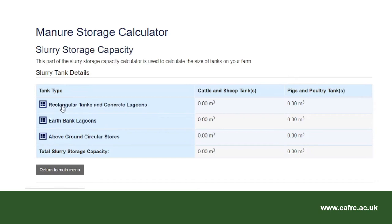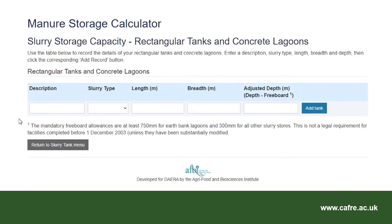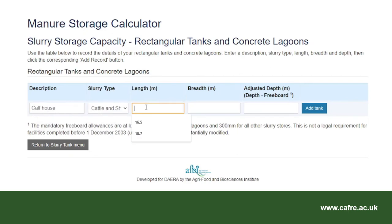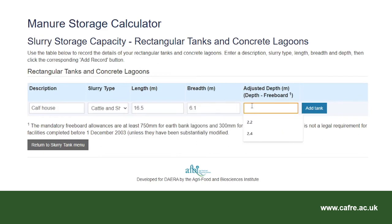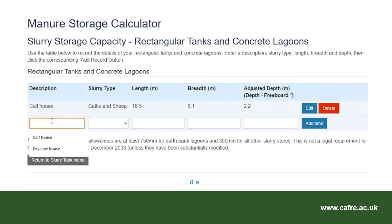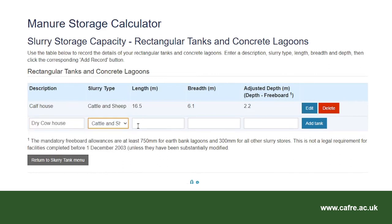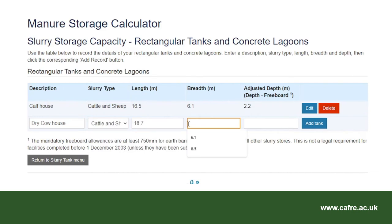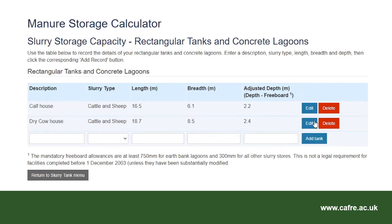I will select rectangular tanks and concrete lagoons. The first tank is called 'calf house'. The slurry type from the drop-down is cattle and sheep. The internal dimensions are a length of 16.5m, breadth of 6.1m, and this tank has a depth of 2.5m; however, subtracting 300mm freeboard gives an adjusted depth of 2.2m. The dry cowhouse also collects cattle and sheep slurry, with dimensions of 18.7m length, 8.5m breadth, and an adjusted depth of 2.4m. Remember to select add tank to save each entry.